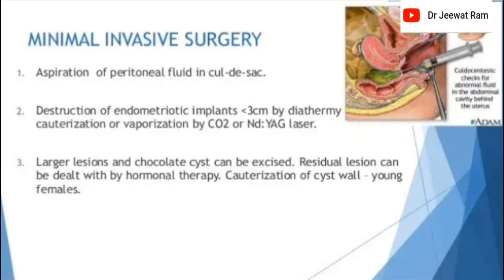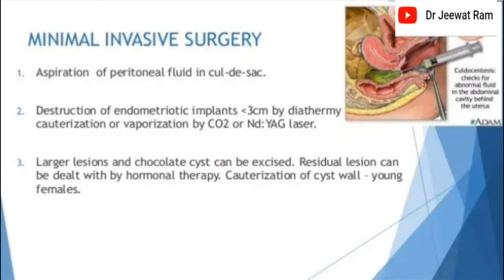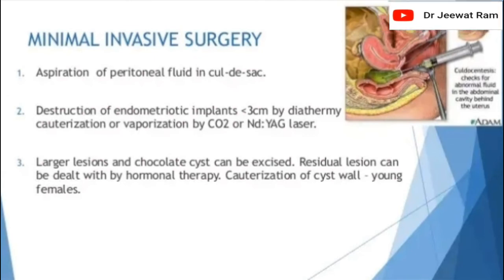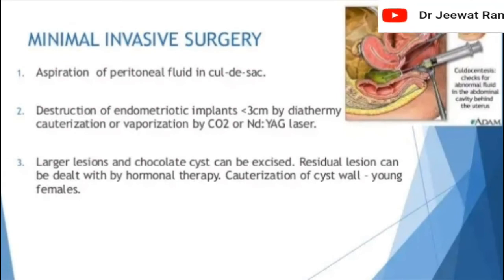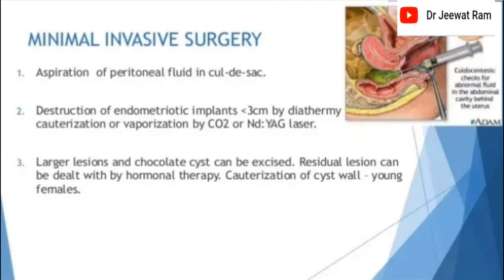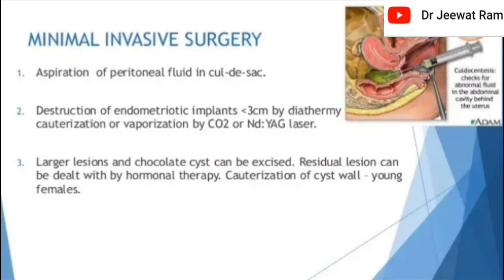Minimally invasive surgery: aspiration of peritoneal fluid in the cul-de-sac, destruction of endometriotic implants less than 3 cm by diathermy, cauterization or vaporization by carbon dioxide or Nd:YAG laser. Larger lesions and chocolate cysts can be excised. Residual lesions can be dealt with using hormonal therapy. Cauterization of cysts is done in young females.